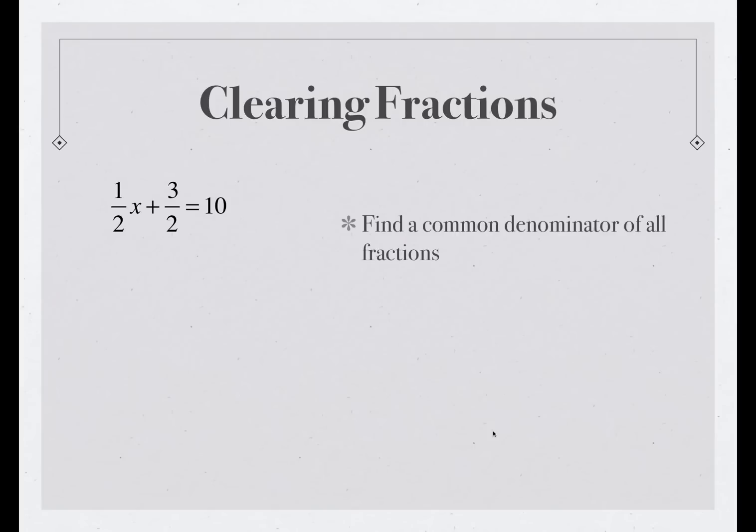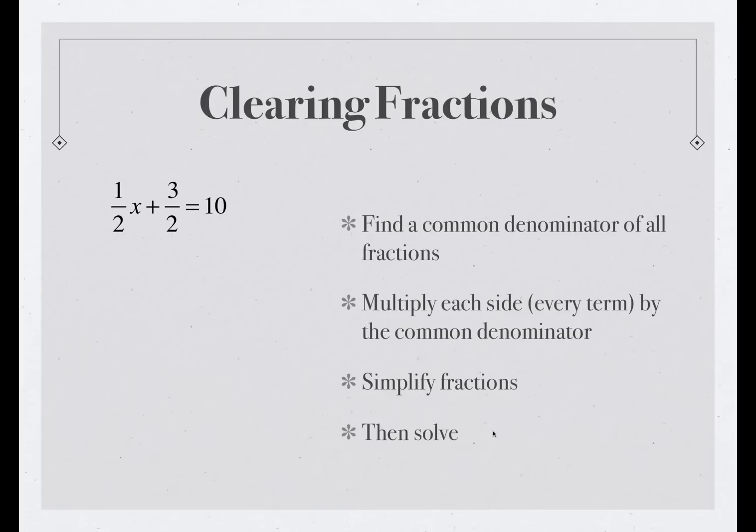The steps that we're going to use are: we're going to find a common denominator for all of the fractions in the problem, we're then going to multiply each side of the equation and every single term by the common denominator, then we're going to simplify the fractions so that all the coefficients are integers, and then we're going to solve.